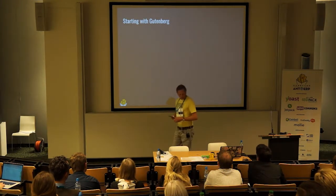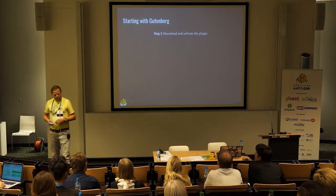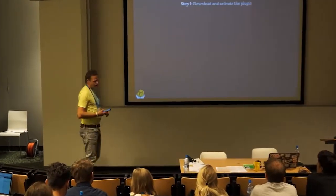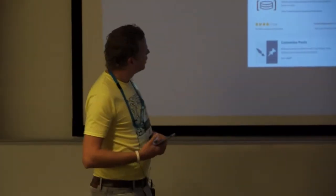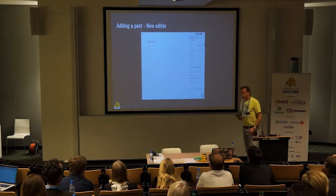So how do you start with Gutenberg if you haven't done that yet? Basically it's one step: go to your WordPress dashboard, go to your plugins screen, and search for Gutenberg. You don't even have to search anymore because it's been added to the featured plugins screen, so you can select it right there. You can see the nice logo — it's also right here on my shirt. Install that plugin, then activate it, and you're done.